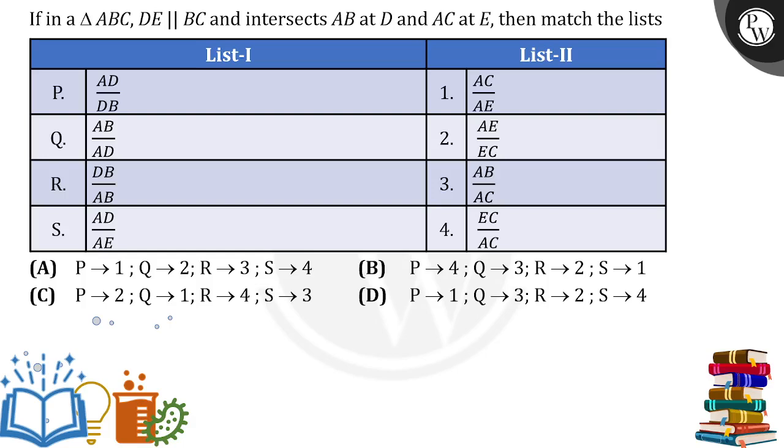Hi everyone, if in a triangle ABC, DE is parallel to BC and intersects AB at point D and AC at E, then match the lists.